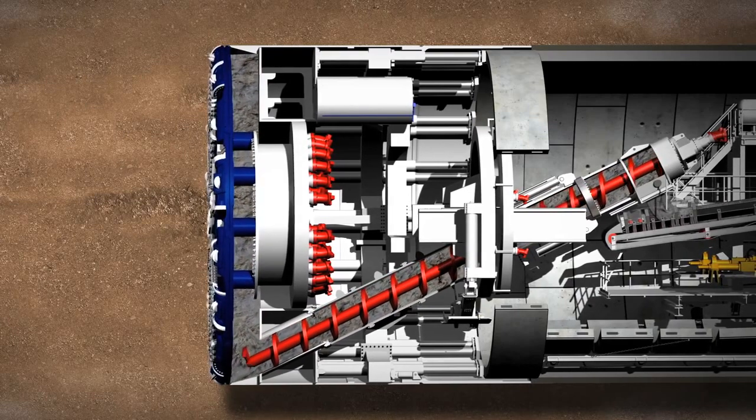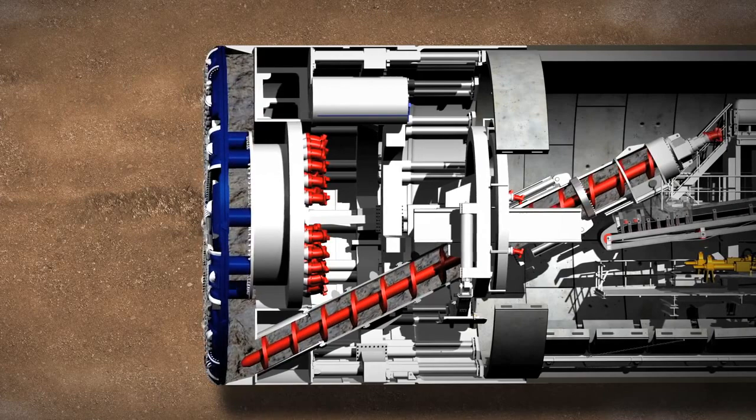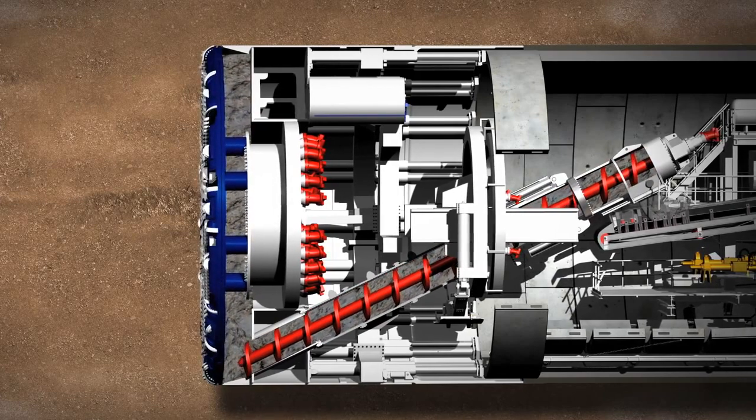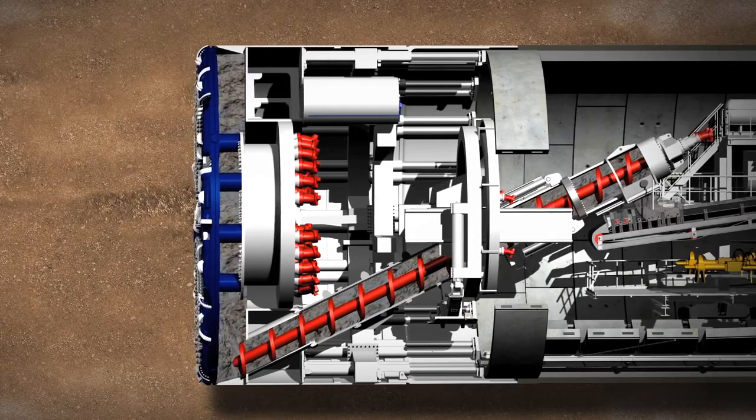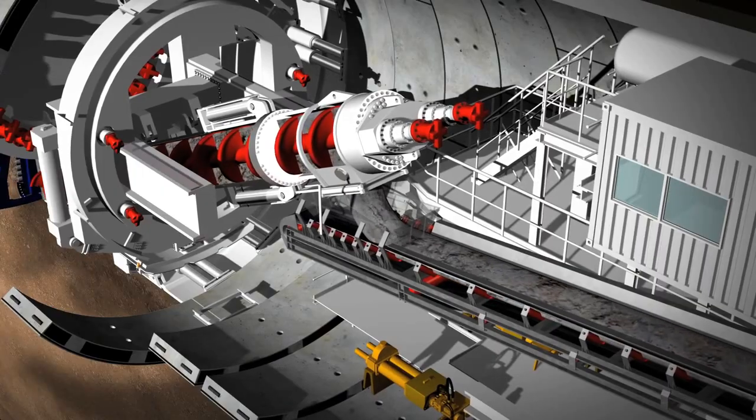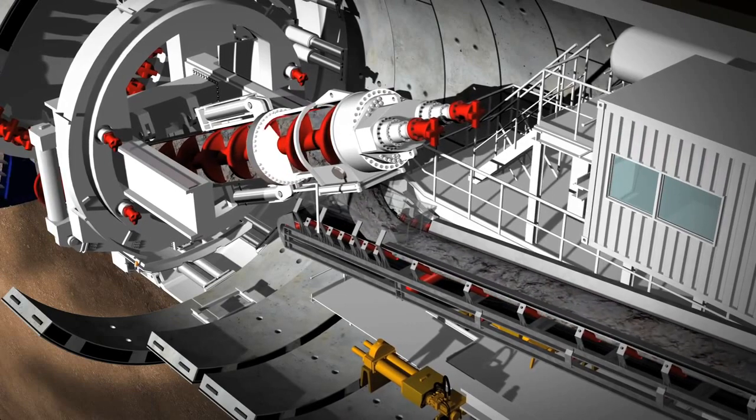The tunnel face is continuously monitored by pressure sensors. They check the turning power of the cutting wheel and the screw conveyor, and they also keep track of the material that's been excavated. The material is then taken away on conveyor belts.